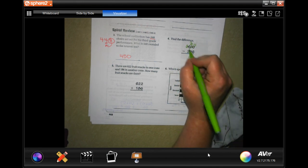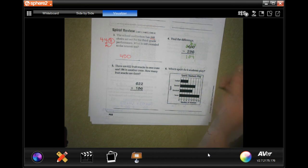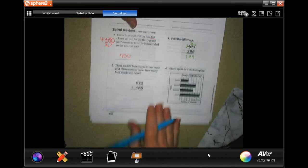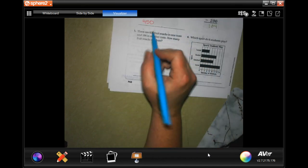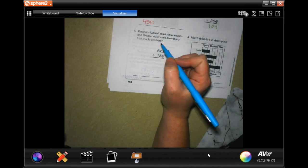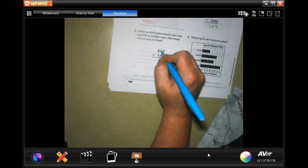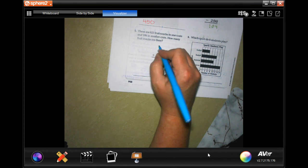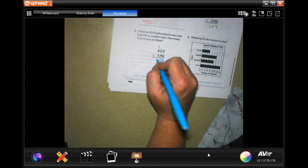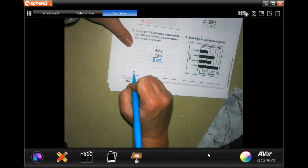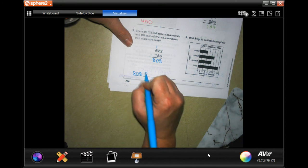There are 622 fruit snacks in one crate and 186 in another crate. How many fruit snacks are there? So all we're doing is adding. Two plus six is eight, two plus eight is ten, carry the one. One plus six is seven, plus one more is eight. So we're going to put 808 fruit snacks.